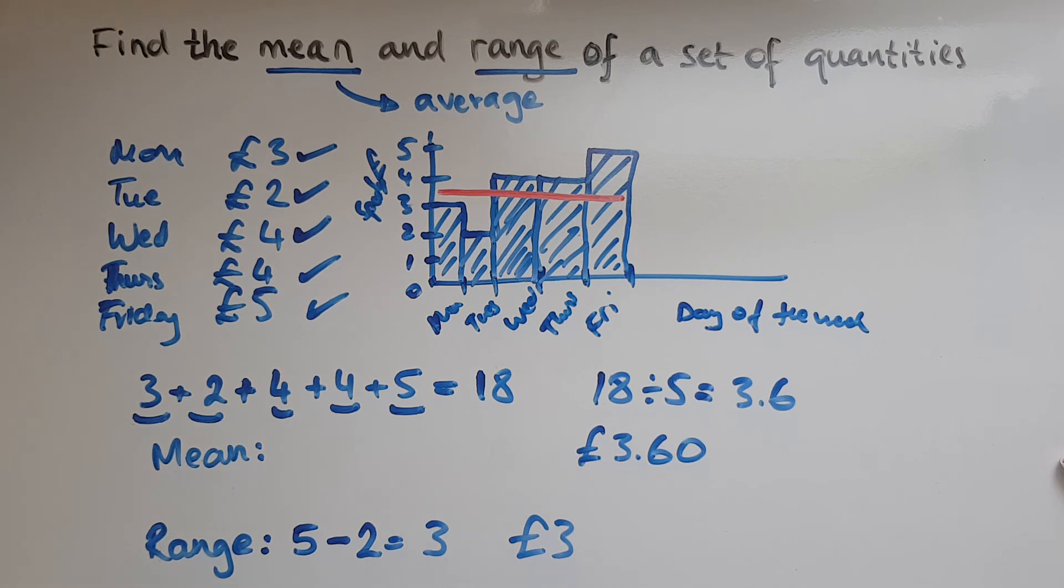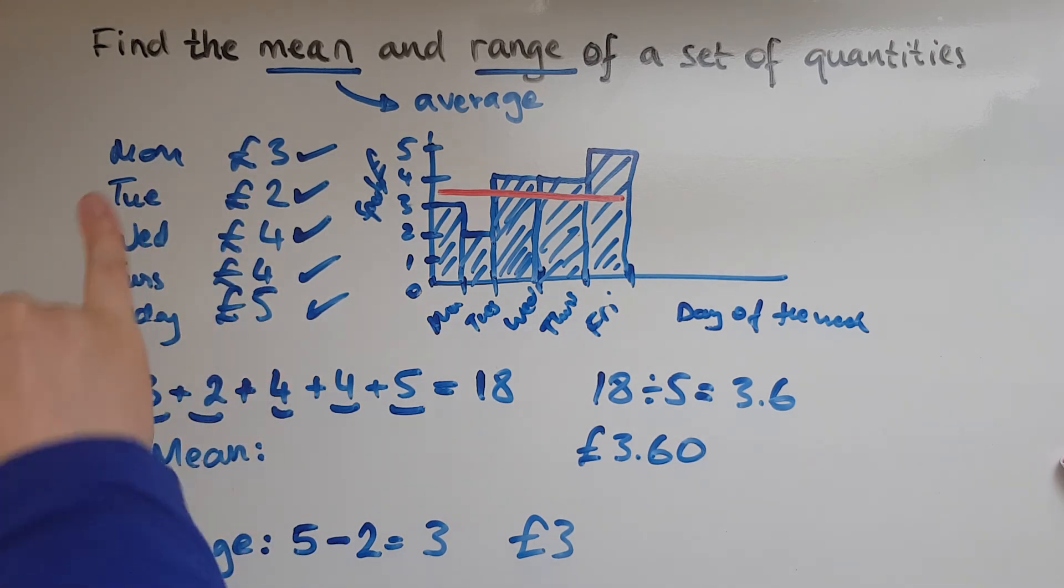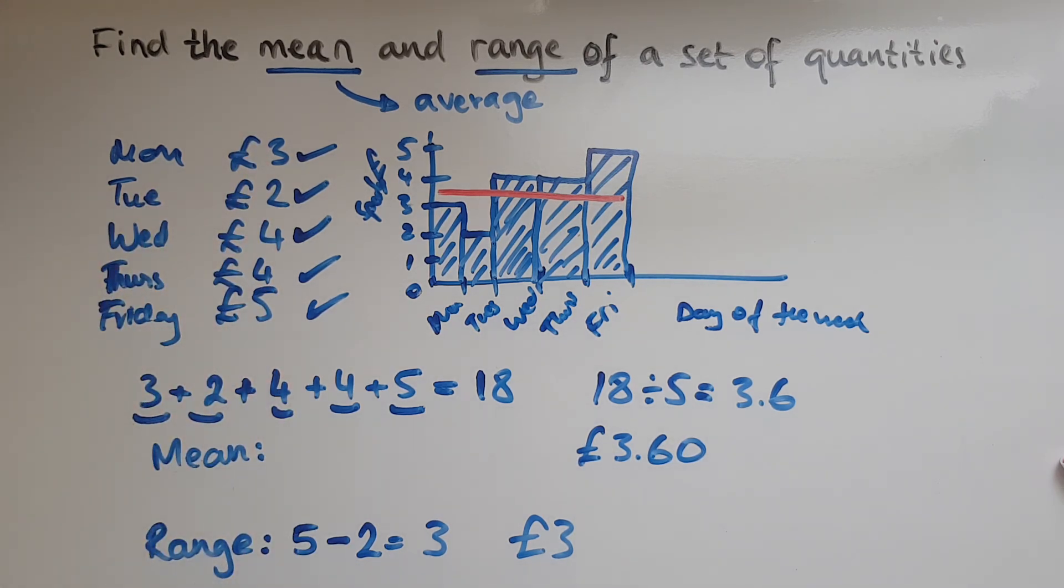So to summarize: with a mean, you take into account all the data, you add them all up and divide by how many they are. Whereas for the range, you look to find the highest and the lowest and take away the lowest from the highest.